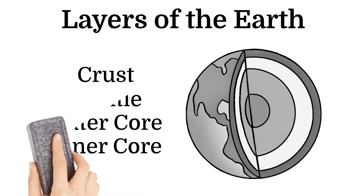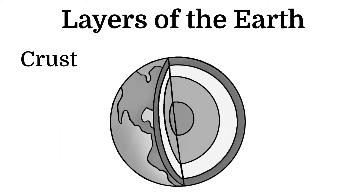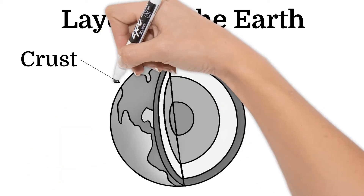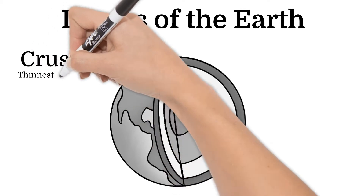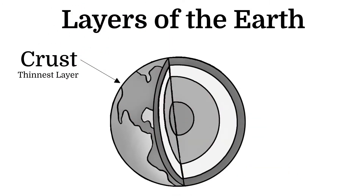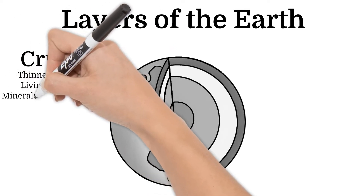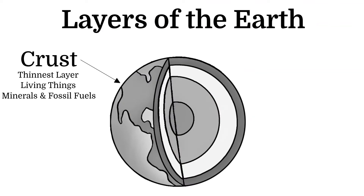First, the crust. The earth's crust is the outside layer and it's the thinnest layer. Even though it is the thinnest layer of the four, all living things are found at this level. It also contains lots of minerals and is where we get fossil fuels from.